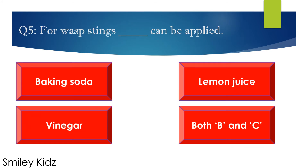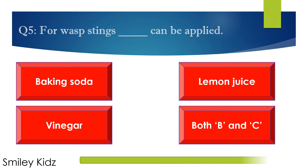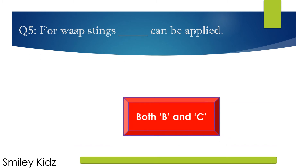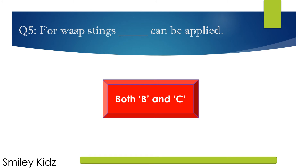Question number 5. For wasp stings, dash can be applied. Options are A. Baking soda, B. Lemon juice, C. Vinegar, and D. Both B and C. Your time starts now. Your time is up. The right answer is both B and C.